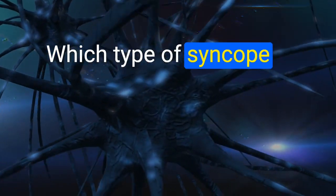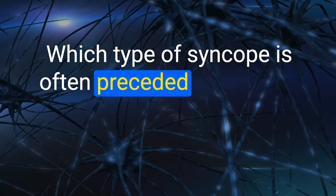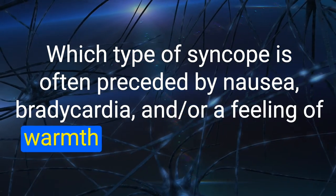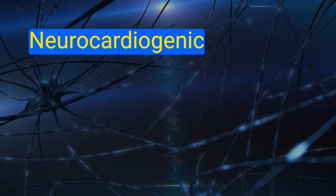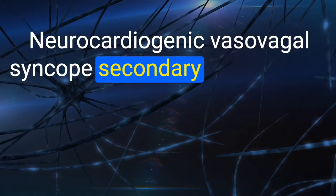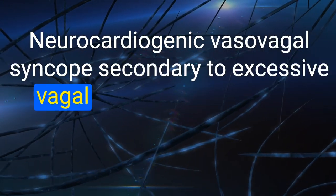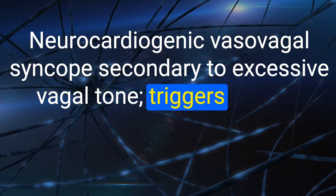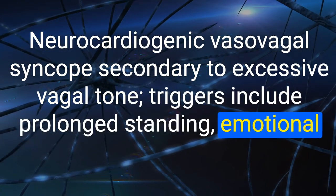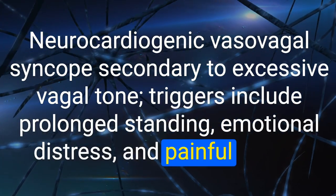79. Which type of syncope is often preceded by nausea, bradycardia, and/or a feeling of warmth throughout the body? Vasovagal syncope — secondary to excessive vagal tone. Triggers include prolonged standing, emotional distress, and painful stimuli.